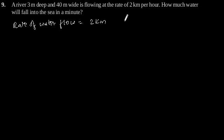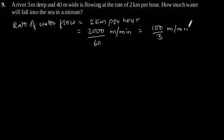Given rate of water flow is 2 km per hour, which is equal to 2000 divided by 60 meter per minute, which is equal to 100 by 3 meter per minute.